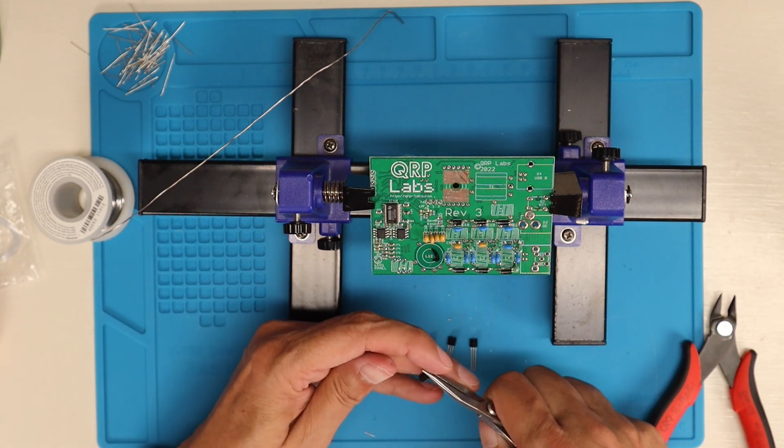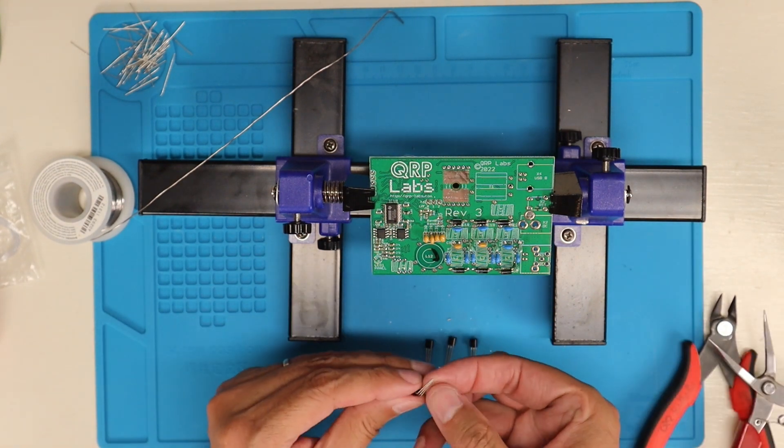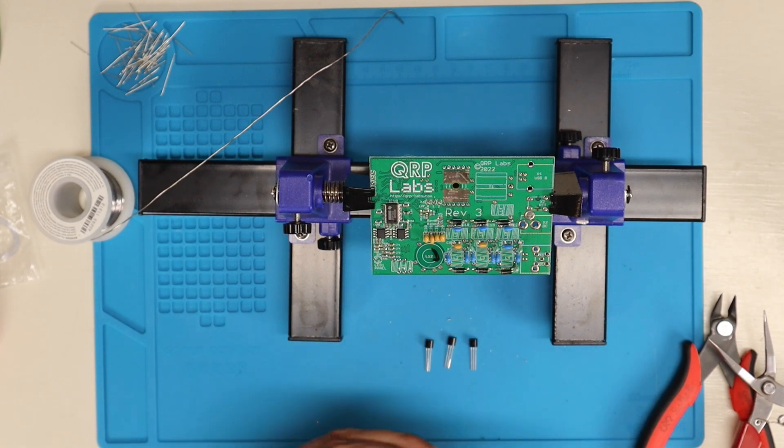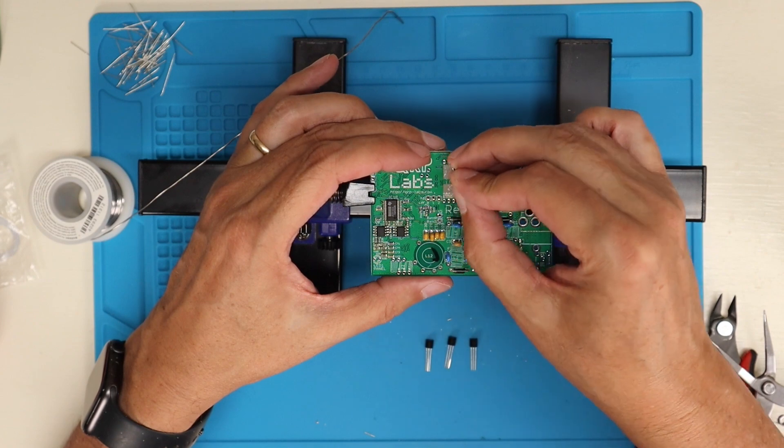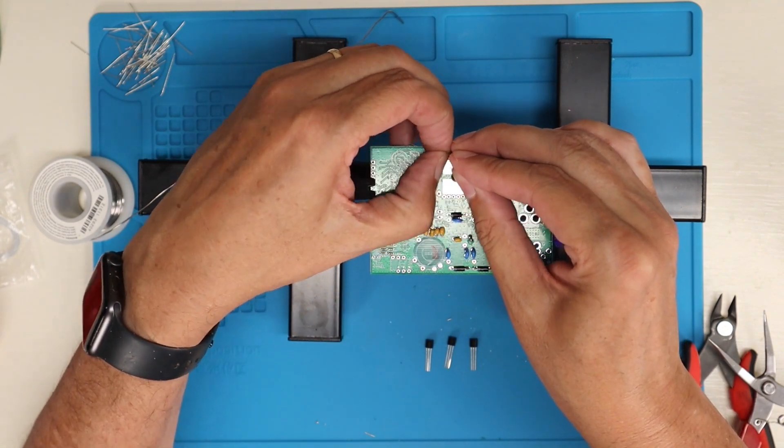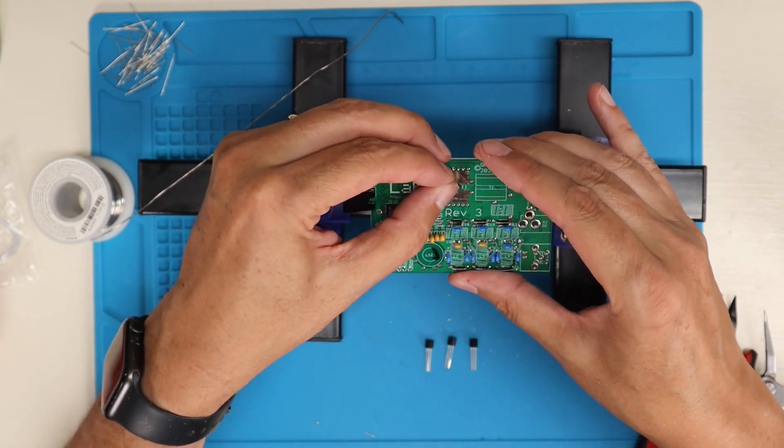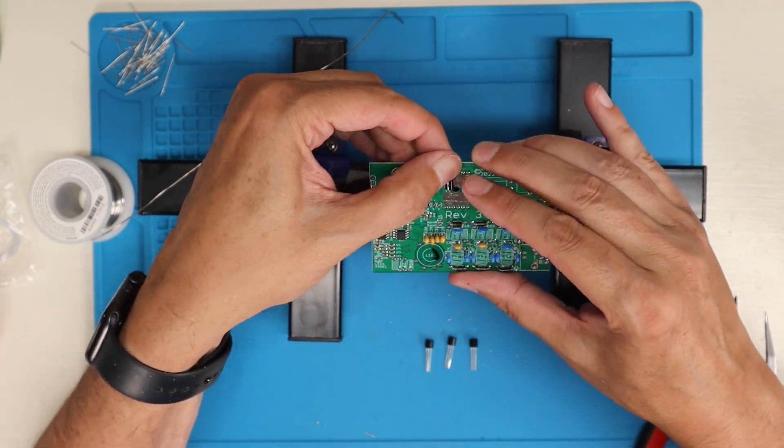The first thing we're going to do is bend the legs of these transistors. You'll notice I used my needle-nose pliers as a guide to bend the legs to 90 degrees. It just so happened my needle-nose pliers had the perfect distance so that when this lays flat on the pad there, it's pretty well centered.